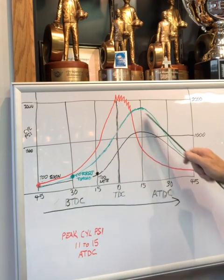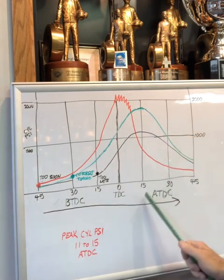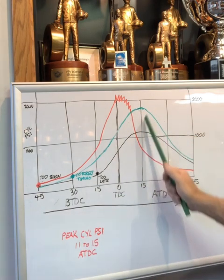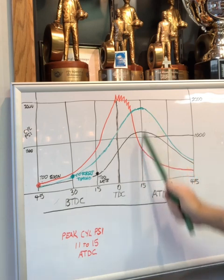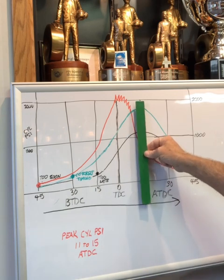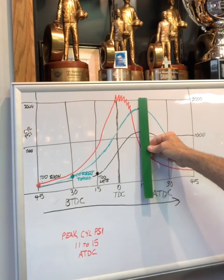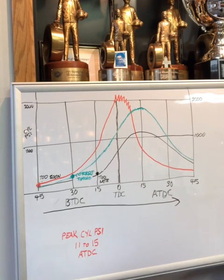We want peak cylinder pressure about 11 to 15 degrees after top dead center. Some engines really love it at 11 degrees, some engines love it at 15 degrees, but almost every engine is in this range of where they want peak cylinder pressure. That's after top dead center.